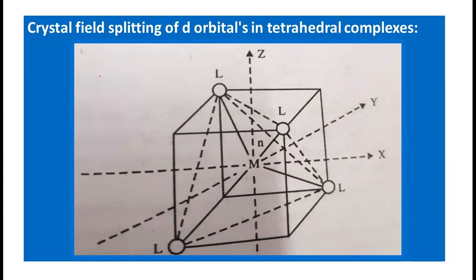The tetrahedral complex can be represented as ML4, where 4 is the coordination number of the metal and 4 ligands are attached to the central metal. In an octahedral complex, the coordination number is 6 and 6 ligands are bonded to the metal.